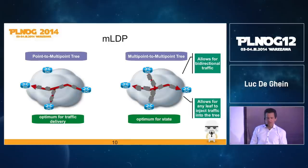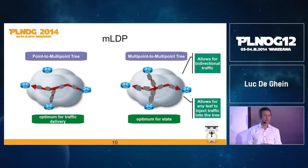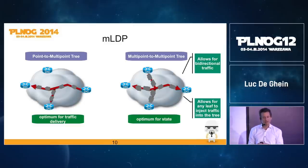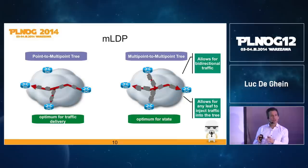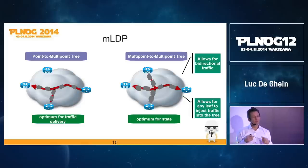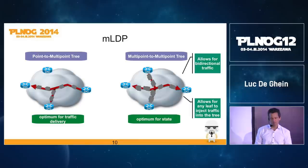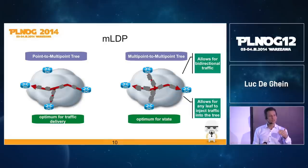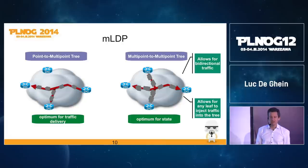Looking at MLDP in more detail: it can build a point-to-multipoint tree, where the ingress router sends traffic into the MPLS cloud, core routers replicate the label-encapsulated multicast packets, and traffic is delivered to one or more egress PE routers — not necessarily all of them, just the subset that have multicast enabled for that VPN with receivers behind them. This is very optimal for traffic delivery.